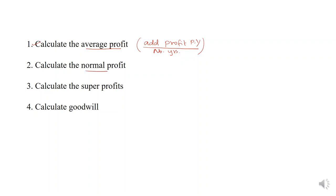After calculating average profit, your next step is normal profit. How to calculate normal profit? This is very easy. Whatever is the capital employed that is given in the question, multiply that capital by the normal rate of return. This normal rate of return and capital will be given in the question.